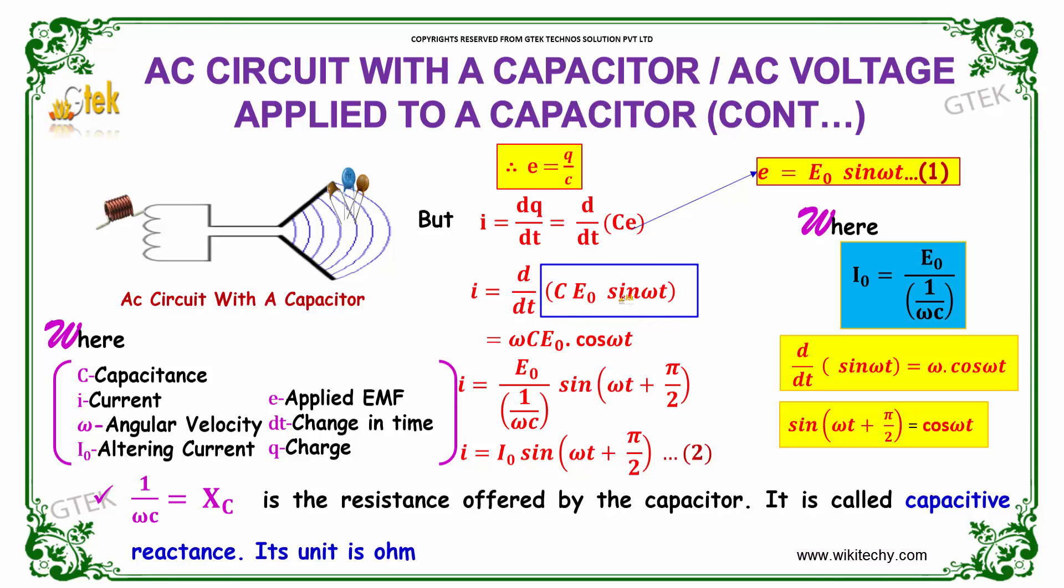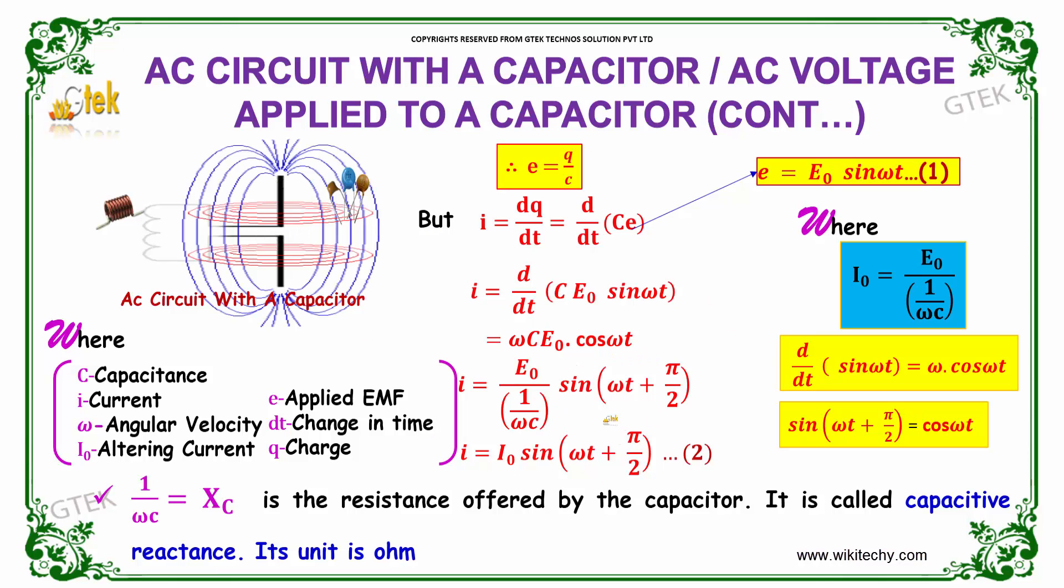You will be getting d by dt of sin ωt is cos ωt. Since we got the phase differences, you will be getting cos ωt can be replaced by sin(ωt + π/2) due to the phase difference.